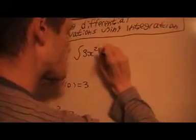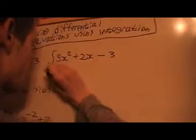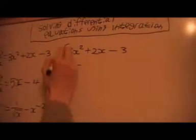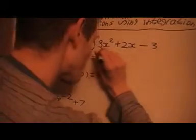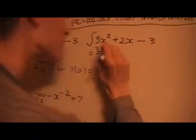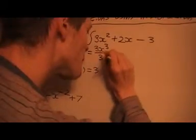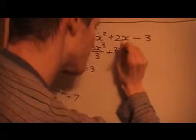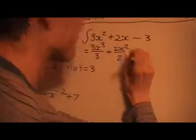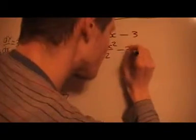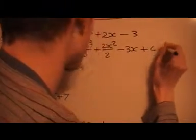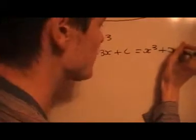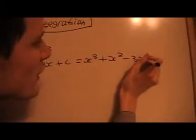To solve this equation here I'm going to integrate, so I'm going to find the integral of 3x squared plus 2x minus 3. When I integrate that, remember I add 1 to the power and I divide by the new power. Again here I add 1 to the power and divide by the new power, and here I get minus 3x plus c, which we can simplify to x cubed plus x squared minus 3x plus c.